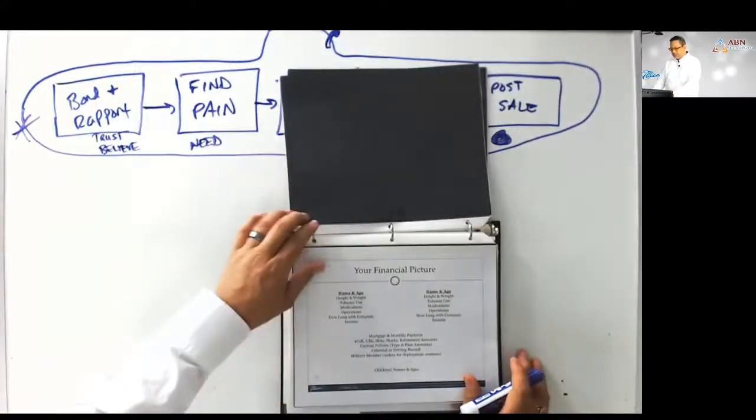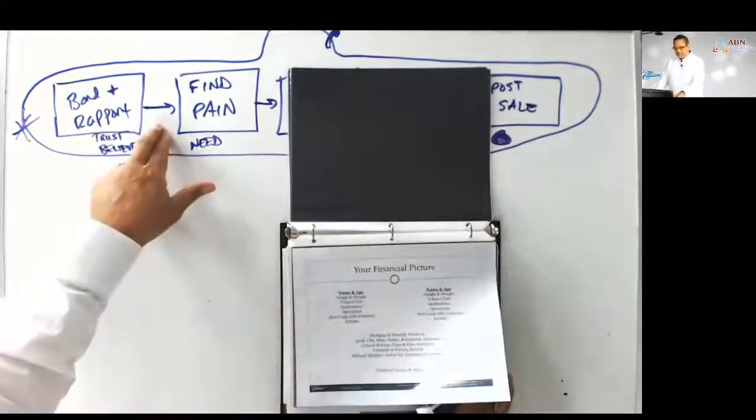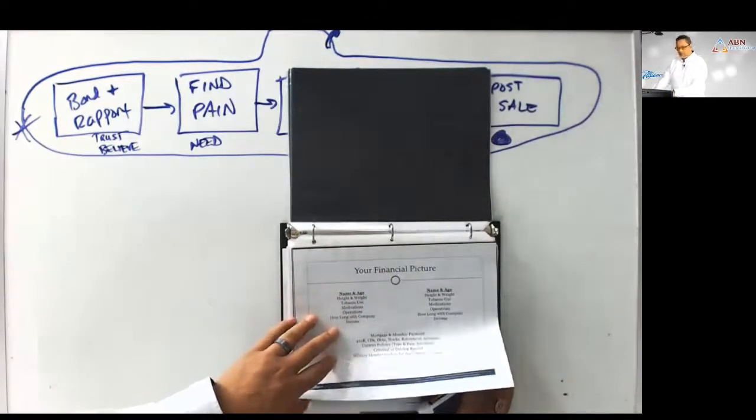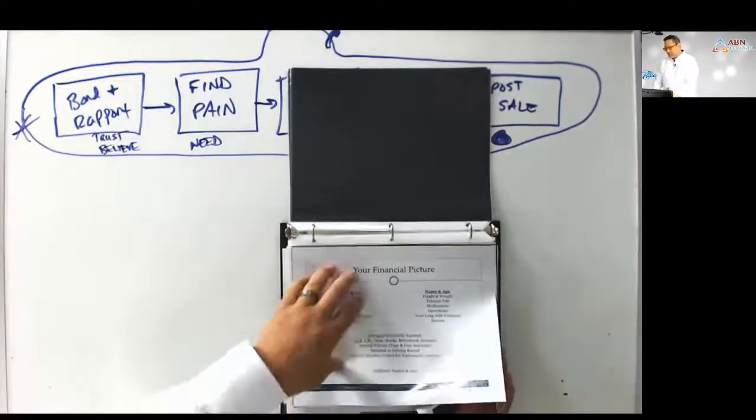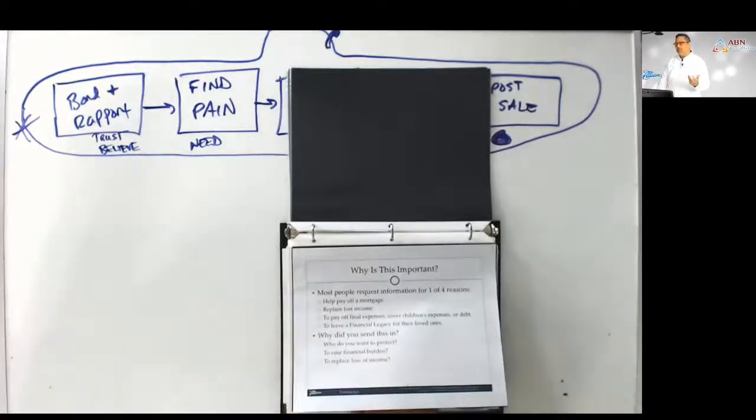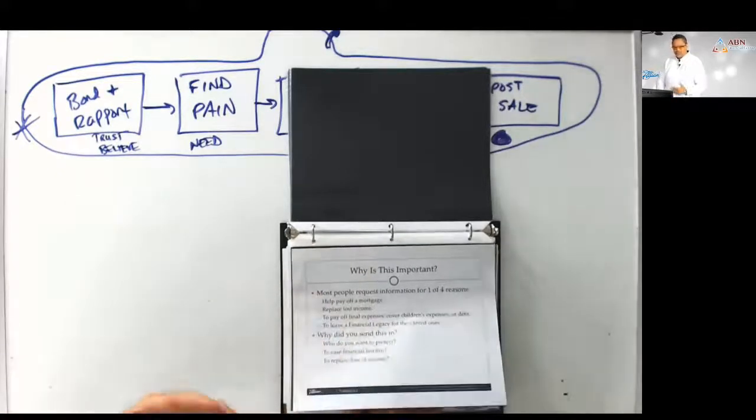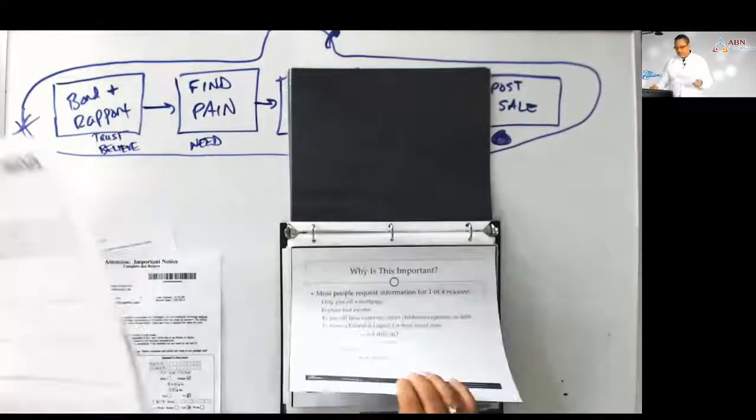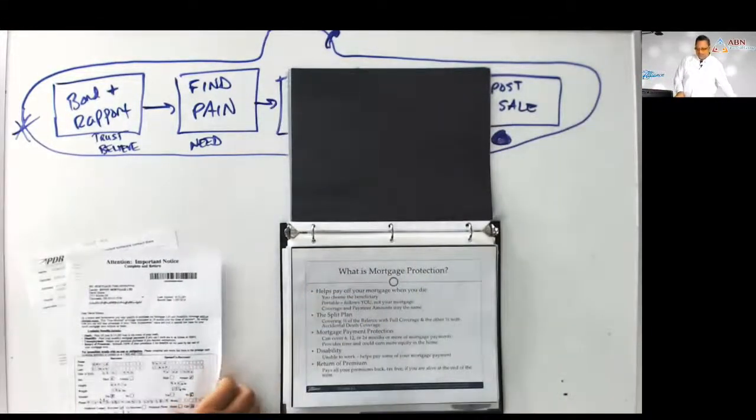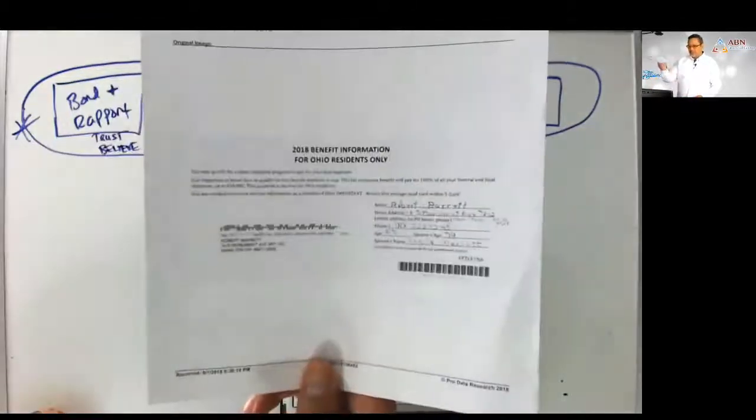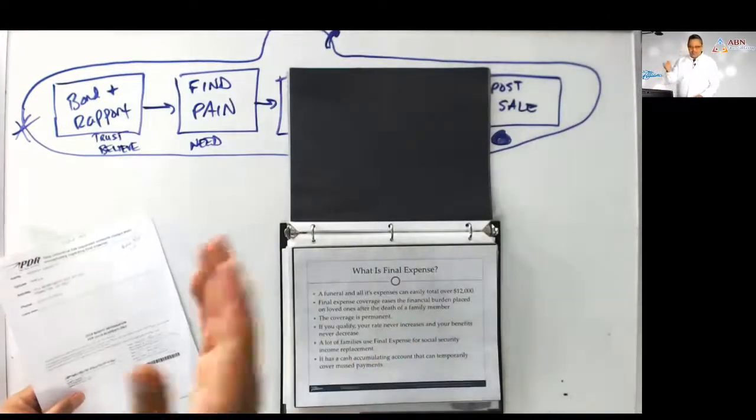The pain finding section begins with your financial picture. So the transition between here and here is your financial picture. This is where you're filling out all the detailed information about the client's height and weight, their medications, do they have a 401k at another company. This is where we fill out what we call the green sheet. Then the pain finding continues with one of these three slides, which depends on the type of lead that you're using. The why this is important slide goes with the new marriage lead or the general life insurance. If you have a mortgage protection lead, then you do the what is the mortgage protection slide. When you have a final expense lead, you do the what is final expense slide.